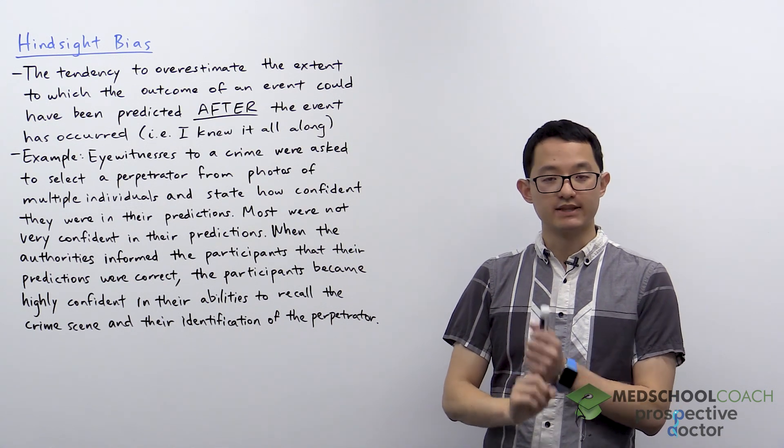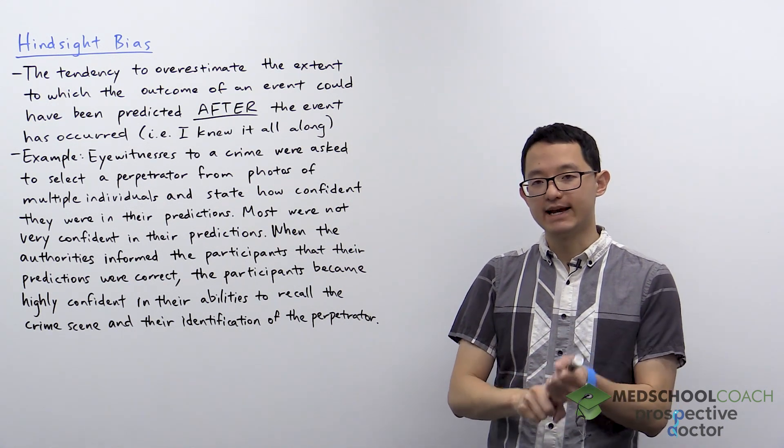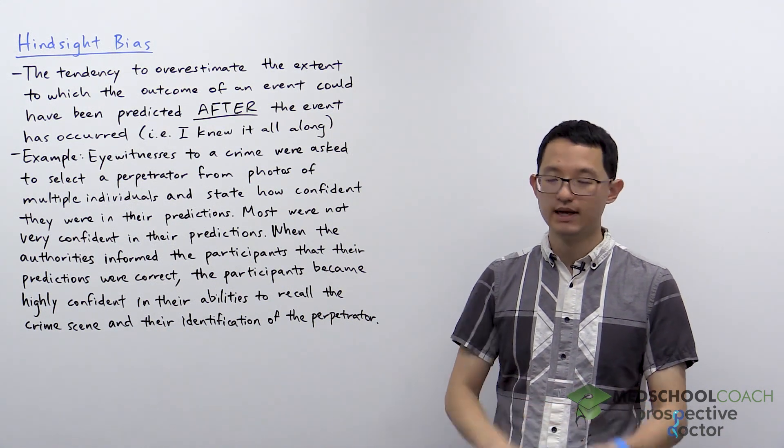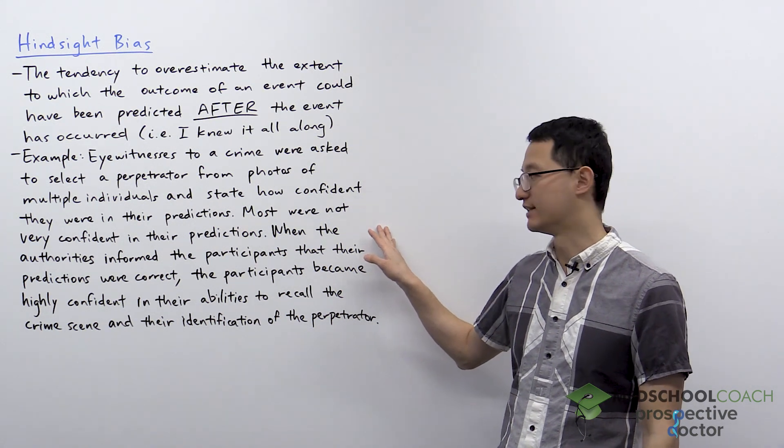The eyewitnesses will select a person from the many photos and then be asked how confident they are in their selection. Typically, most eyewitnesses will not be very confident in their prediction.